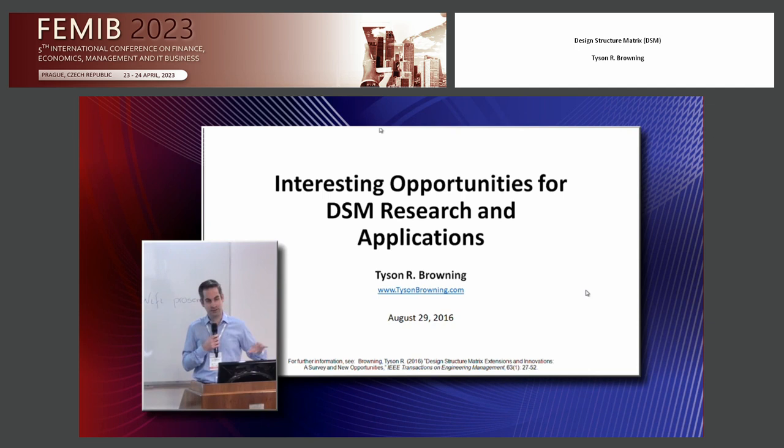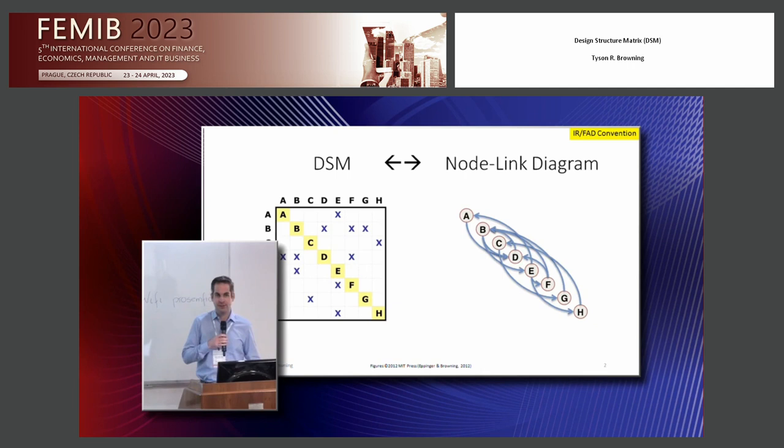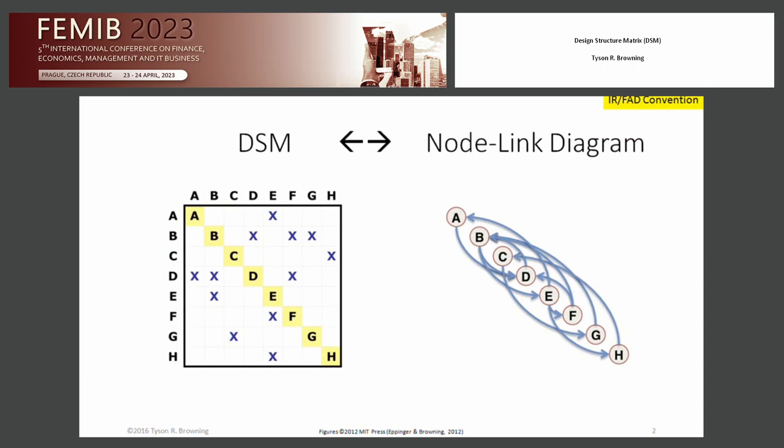So I put in one slide since the tutorial is later, and this is just in case anyone here needs basic DSM orientation. But many people find it easy to understand what we call a node-link diagram or a network diagram or a directed graph diagram, and it can be shown in an equivalent DSM square matrix.